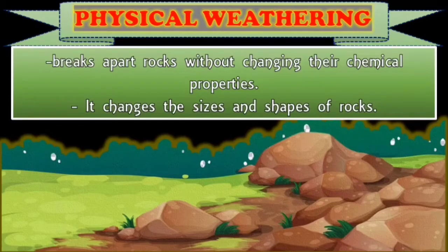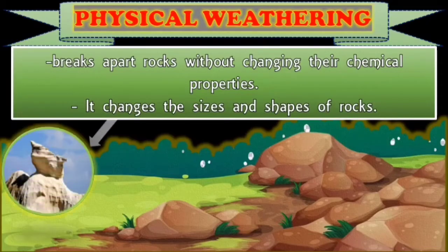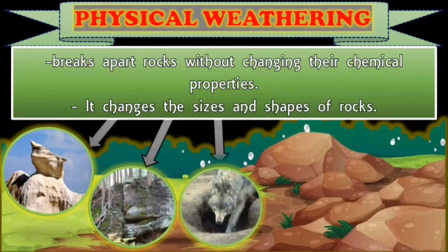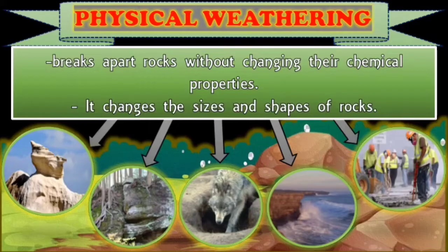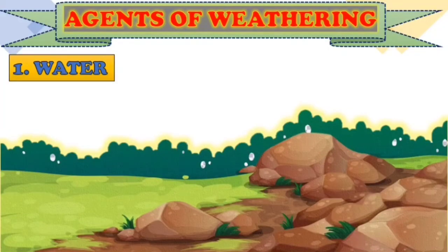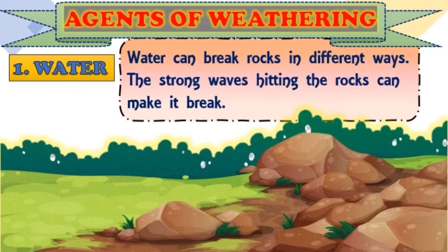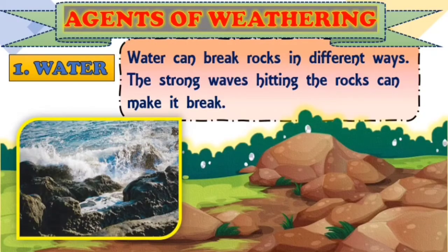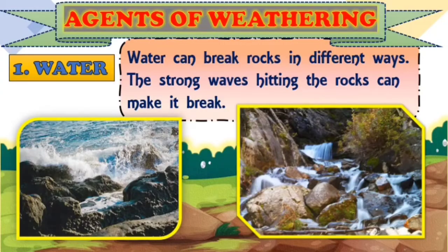Mechanical weathering involves different processes such as wind, plants, animals, water, and humans. The first agent is water. Water can break rocks in different ways. Strong waves hitting the rocks can make them break. Water can seep into the cracks of rocks, and when it gets cooler, this water can expand and turn into ice, which can trigger rocks to break as well. That is why water is a contributing agent of weathering.